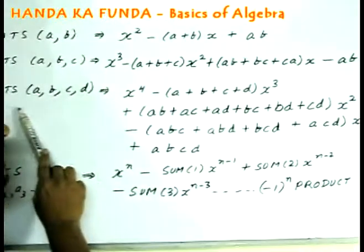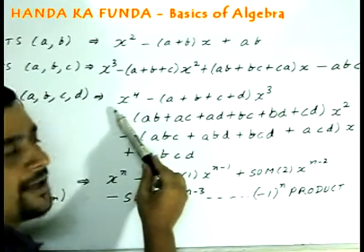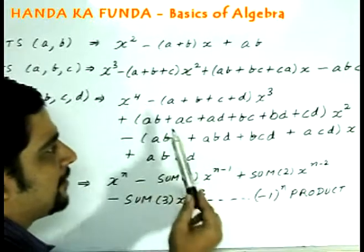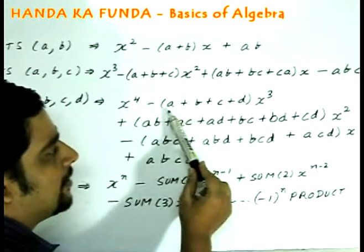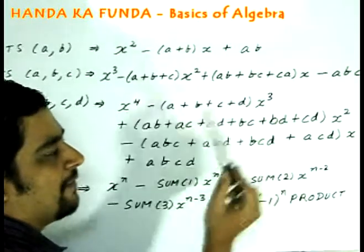If the equation has four roots a, b, c, and d, in that case let us look at what it will be. It would contain a term x to the power 4 for obvious reasons, minus the sum of the roots a, b, c, d taken once at a time will be the coefficient of x³.